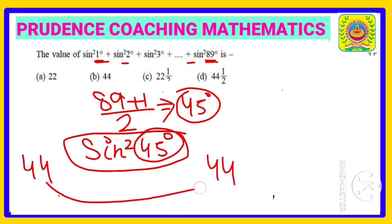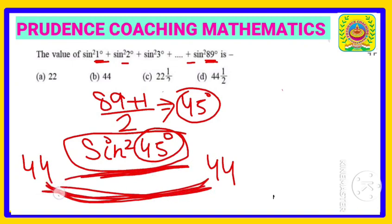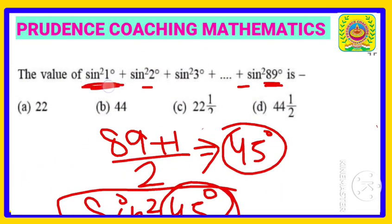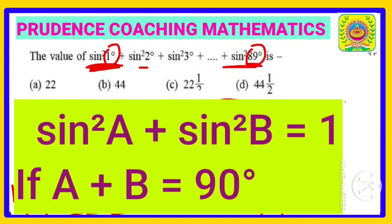So you can see we have 44 pairs except this sine square 45. If you add these pairs, you need to remember one thing, listen very carefully. You must remember: if sine square A plus sine square B are given, and if you find A plus B is 90...